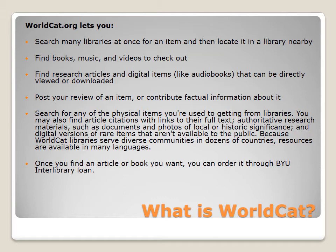You can search for any of the physical items you're used to getting from libraries. You can find articles and citations with links to their full text, authoritative research materials such as documents and photos of local and historic significance, and digital versions of rare items that aren't available to the general public. Because WorldCat libraries serve diverse communities in dozens of countries, resources are available in many languages. Once you find an article or book you want, you can order it through BYU Interlibrary Loan.